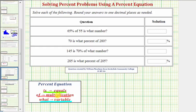Let's find these key words in each of our questions. Here's 'is', here's 'of', 'what number', 'what percent', 'what number', and 'what percent'. Now, let's set up our equations.